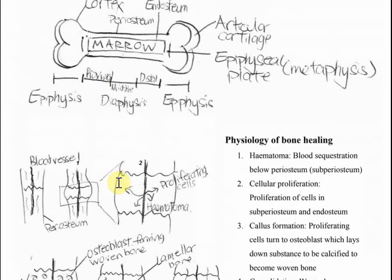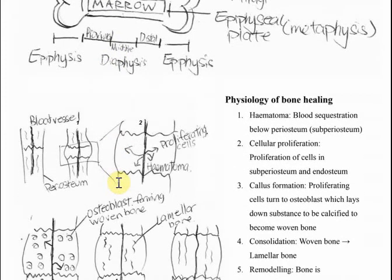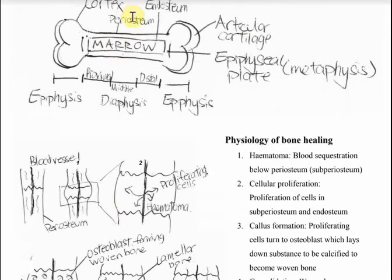Now in terms of bone healing, what happens when you break a bone? You've got your blood vessel leaking blood into the subperiosteal space - that's the periosteum, the outer lining.